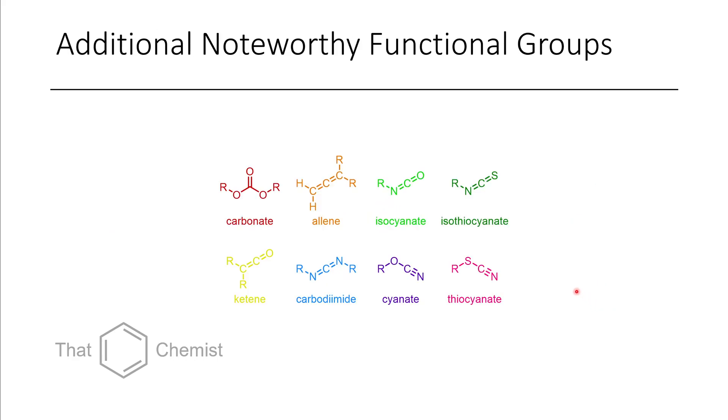I wanted to introduce additional functional groups before we continue with the chirality lecture. One functional group is carbonates. It's kind of like an ester, but there's an oxygen on either side. If we have two double bonds directly in a row, like carbon, double bond, carbon, double bond, carbon, we call that an allene. These tend to be very reactive intermediates. Some exist in the case of MAPP gas, which is used as a welding gas.